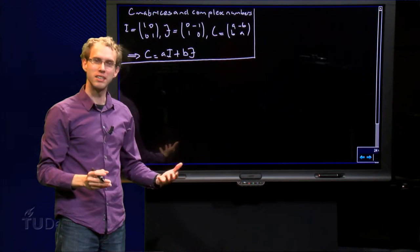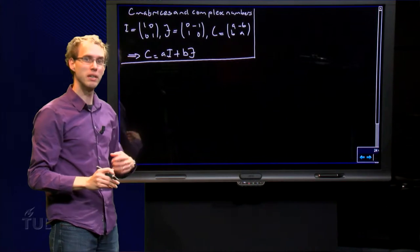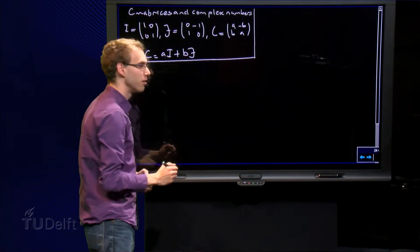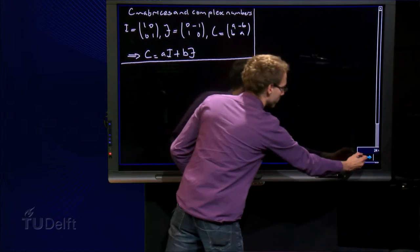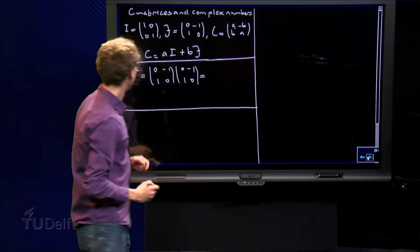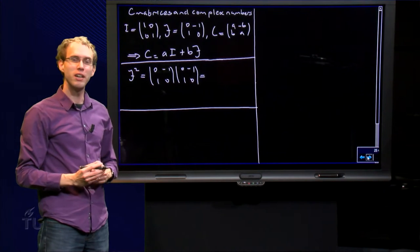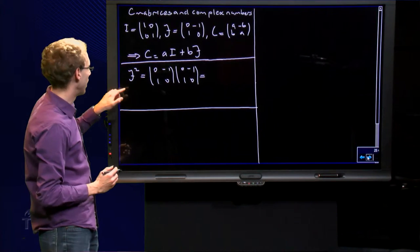What do we get from that? Well, let us go on, let us take a closer look at the matrix J. We know how the matrix I behaves. So let us compute J squared, because then something special is going to happen.